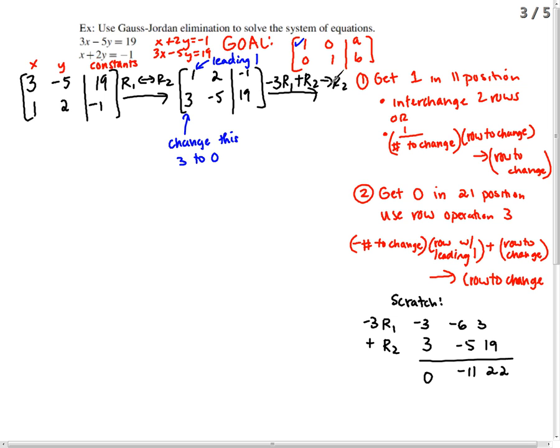So this tells me to write this new result in the place of R2. So I did not change row 1, so I'm going to rewrite row 1: 1, 2, negative 1. And instead of this, I'm going to write the new answer: 0, negative 11, and 22.